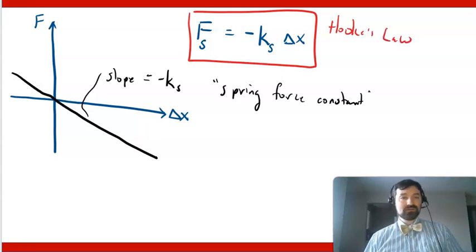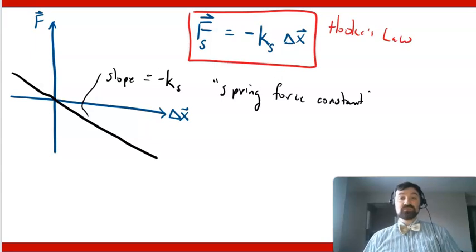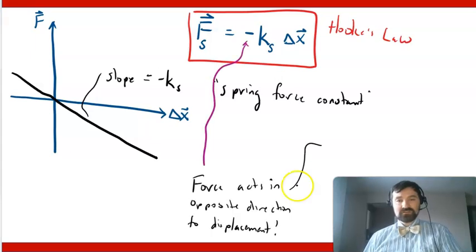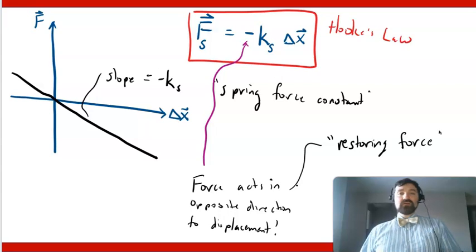And if we want to be really formal here, these are both vector terms, which is why there's that negative sign present. The force not only is proportional to the displacement, but is in the opposite direction to the displacement. This is sometimes referred to as a restoring force, which is important when we talk about oscillations. Okay, so that is Hooke's law.